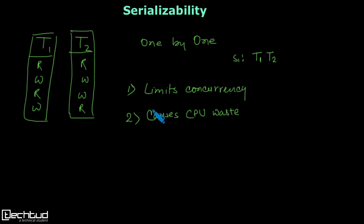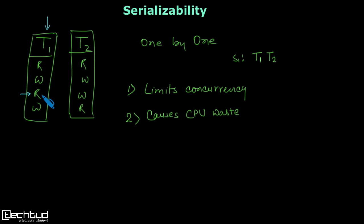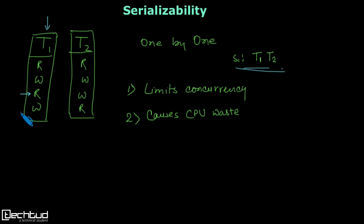The second disadvantage is that it can cause CPU waste. When T1 is executing, the idea is that all operations of T1 must finish before T2 starts. Meanwhile, when a read operation from T1 is executing — which is an I/O operation and doesn't need the CPU much — the CPU is still busy because we cannot allocate it to T2, as we are restricted by the serial schedule.